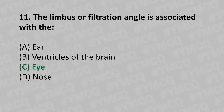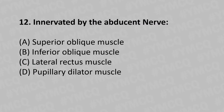Moving to our twelfth question: innervated by the abducent nerve is which muscle? Option A: superior oblique muscle. Option B: inferior oblique muscle. Option C: lateral rectus muscle. Option D: pupillary dilator muscle.